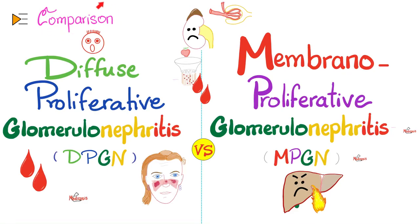Hello lovely people, it's Medicosis Perfectionitis where medicine makes perfect sense. Let's continue our comparisons playlist. How can you differentiate between diffuse proliferative glomerulonephritis and membranoproliferative glomerulonephritis?